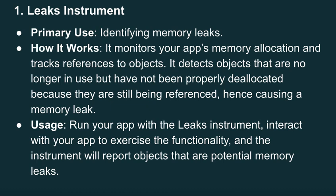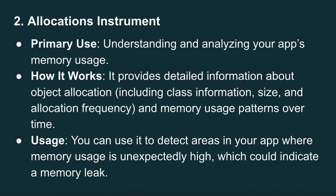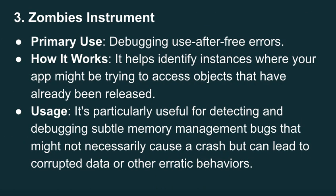Number two, the Allocations Instrument. Its primary use is understanding and analyzing your app's memory usage. It provides detailed information about object allocation including class information, size, allocation frequency, and memory usage patterns over time. You can use it to detect areas in your app where memory usage is unexpectedly high, which could indicate a memory leak.